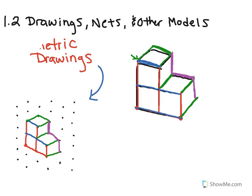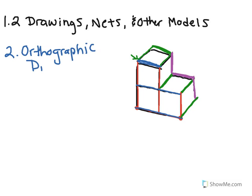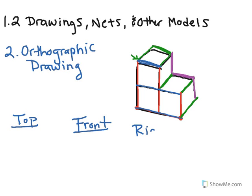Another kind of drawing is called an orthographic drawing. Orthographic drawings are another kind of model for 3D figures. What an orthographic drawing does is show the figure from three particular views: a top view — if you were to look straight down at it — a front view, and a right-hand or left-hand side view. As long as you get a view from the side, you're good.